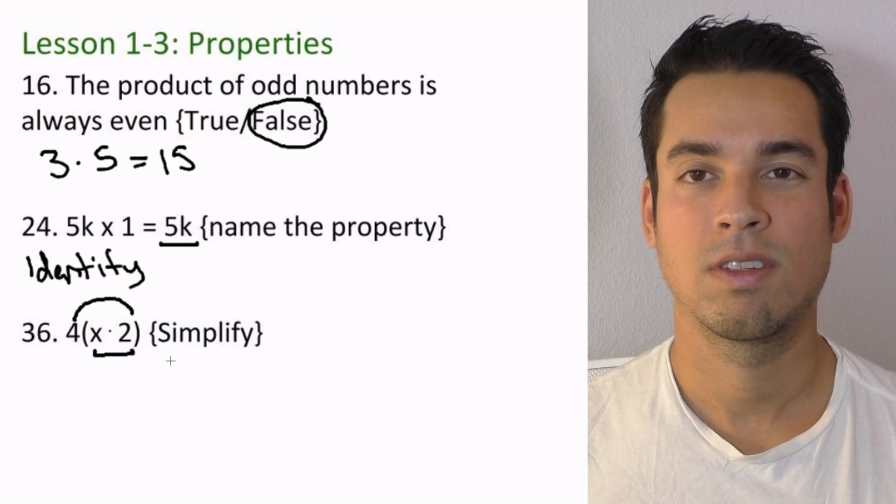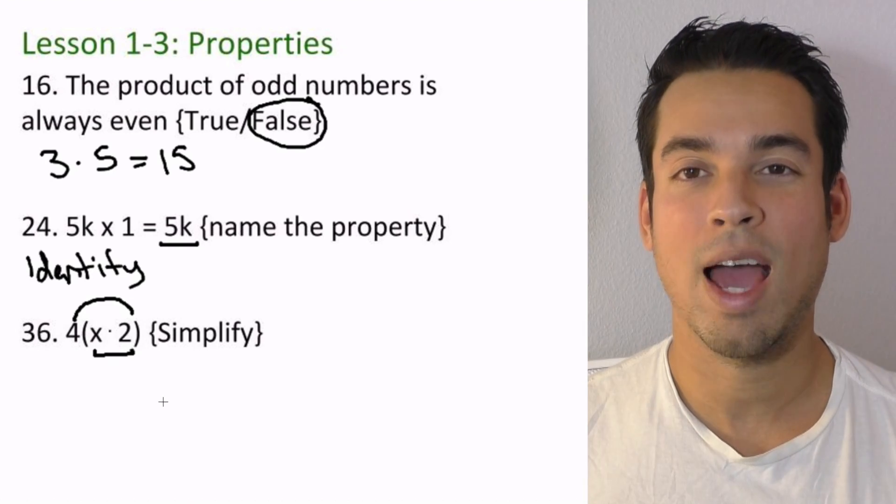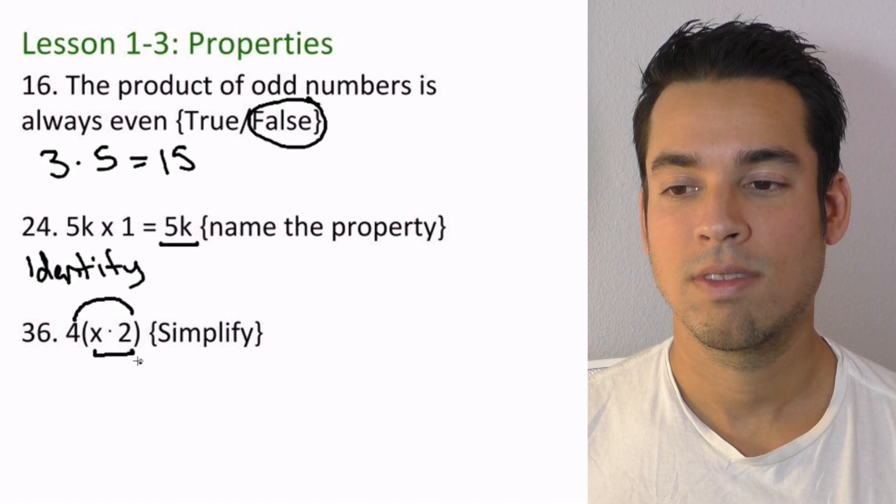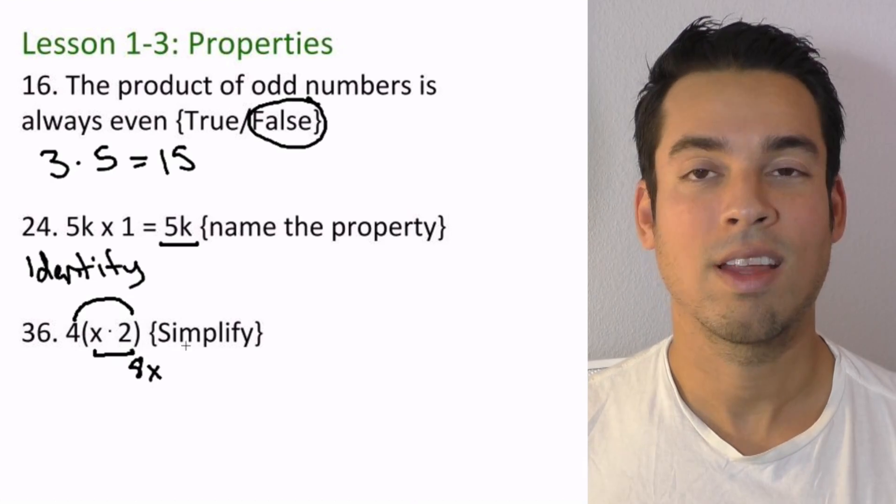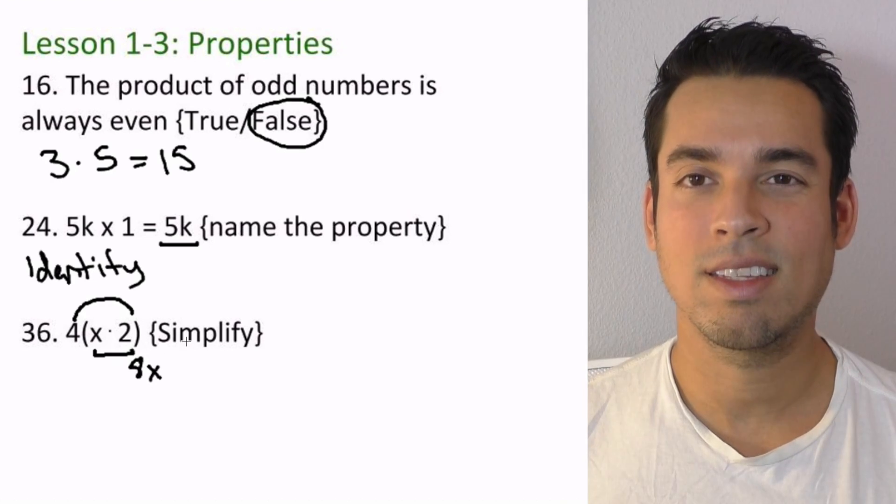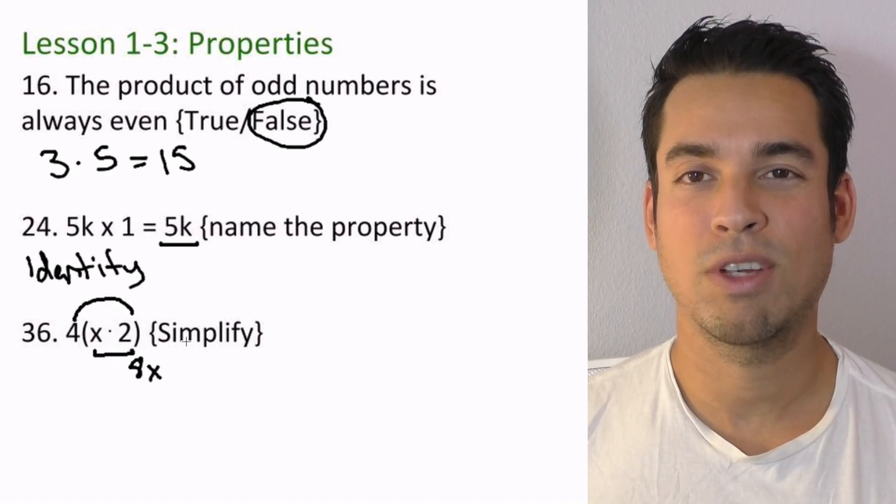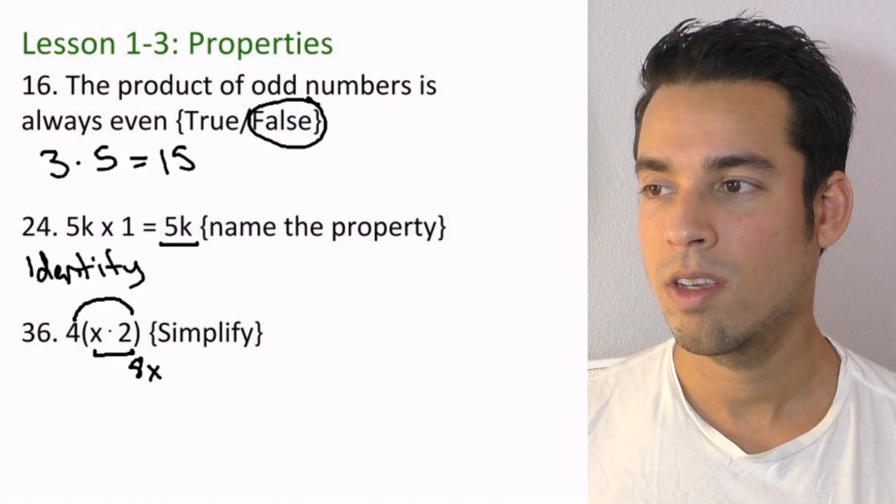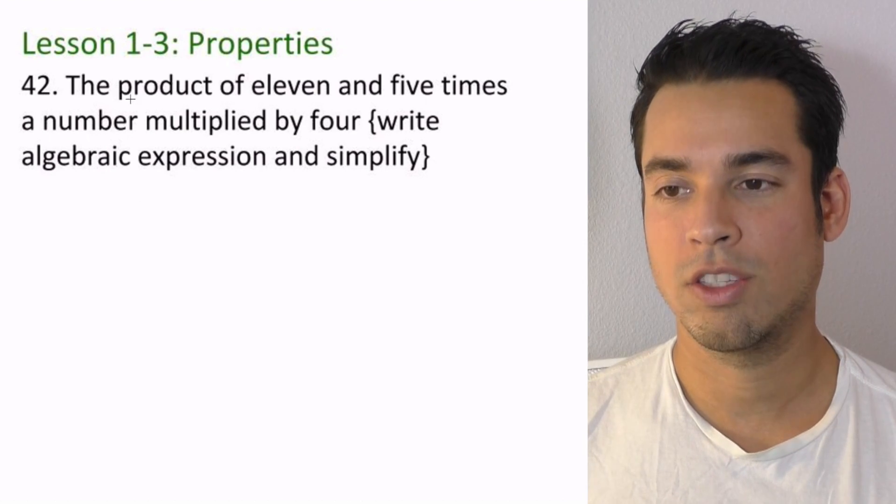Oh, we've got 2 apples, and now we're multiplying those 2 apples by 4. So that means we now have 8 apples, or 8x. So the variable stays in there, but now the coefficients—the numbers—are the ones that actually multiply each other. All right, now let's go on to 42.